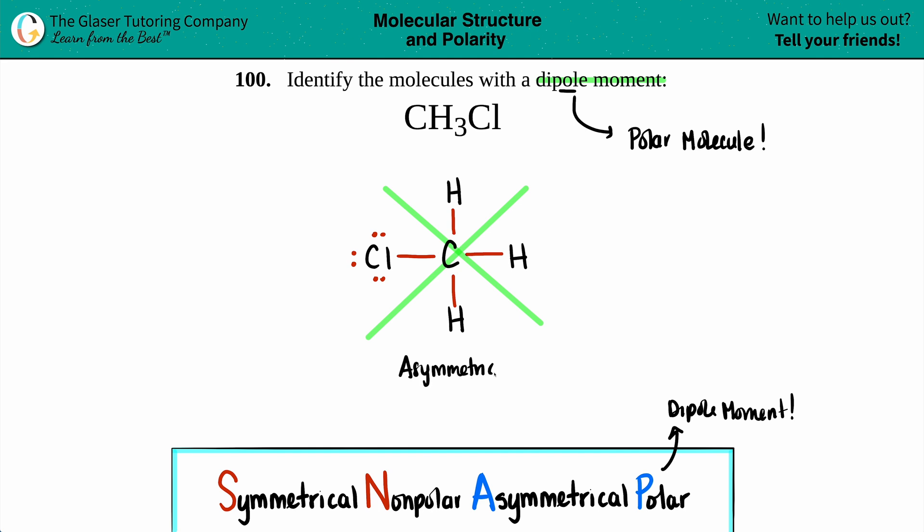And since the chlorine is more electronegative, it's going to pull the electrons towards itself. What a baddie! Anyway, asymmetrical means that you have a polar molecule, and that's what we got here because of the chlorine. And since you got that, you know that you have a dipole moment—that unequal sharing of electrons.